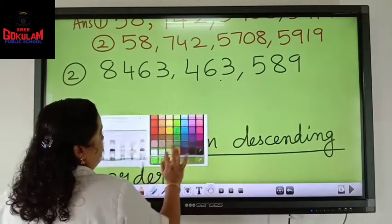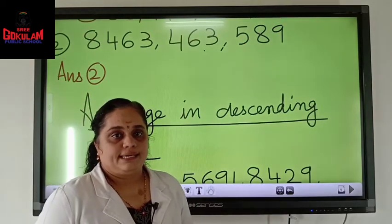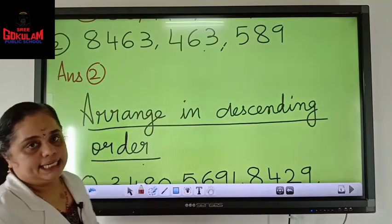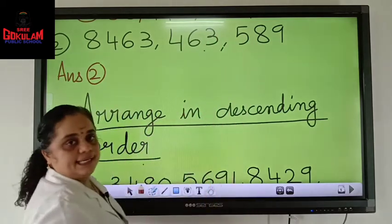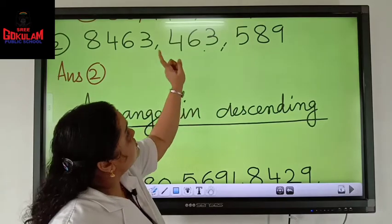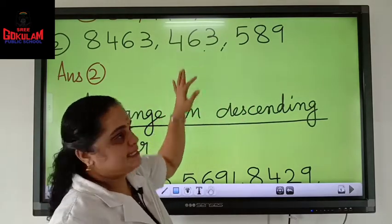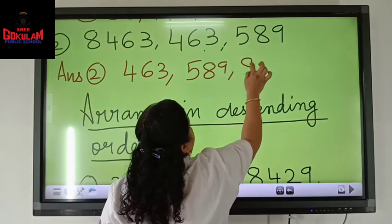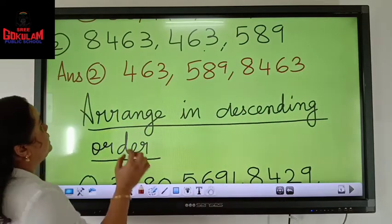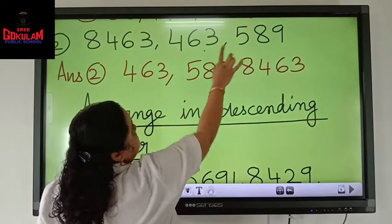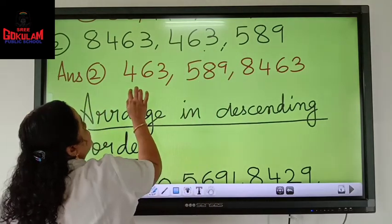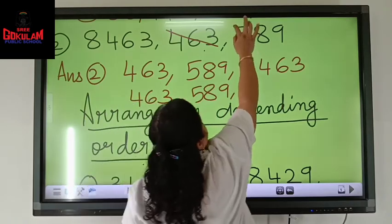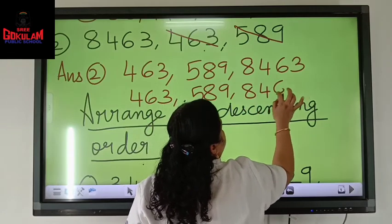Next one. We can do with both methods here. Let us arrange 8463, 463, 589 in ascending order. Which is the smallest number? Count: 4 digits, 3 digits, 3 digits. Among the three-digit numbers, 463 and 589 — naturally 4 is the smallest, so we write 463 first. The next bigger number is 589, and the biggest number is 8463. Using the second method: you find 463 is the smallest, write it and cut it, then go to 589, write and cut it, and the biggest number is 8463.